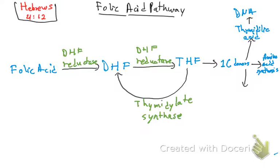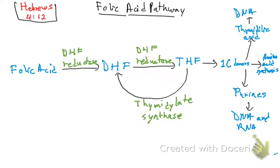We also need folic acid for one more very important thing that we need every day: purines. And purines are going to produce — you guessed it — DNA and also RNA. So basically this completes the folic acid pathway overview.